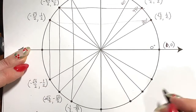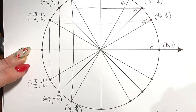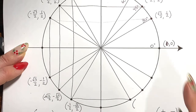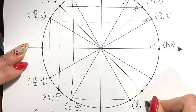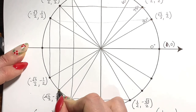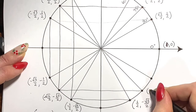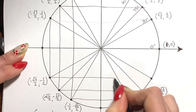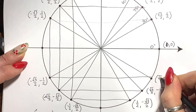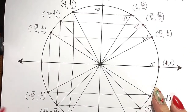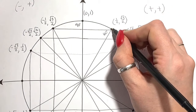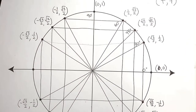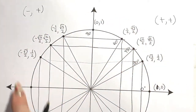For quadrant four, x turns positive and y stays negative. Reflecting the points across: we get (1/2, −√3/2), then (√2/2, −√2/2), and then (√3/2, −1/2). And the lines also connect reflecting straight up and down, making it look nice and symmetrical. That is how you get all the points going around your unit circle.